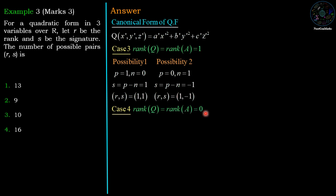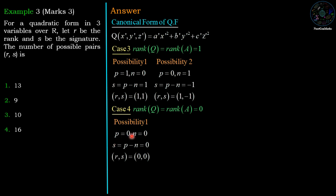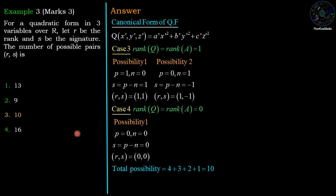If rank A = 0, the quadratic form has no terms — it is the zero quadratic form. The only possibility is p = 0 and n = 0, so both positive and negative terms are absent. Signature is also 0, giving pair (0, 0). Therefore the total number of possible pairs (R, S) is 4 + 3 + 2 + 1 = 10, which is option number 3. So option number 3 is the correct answer.